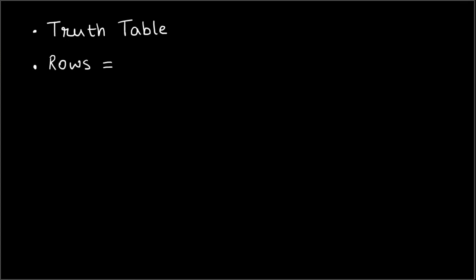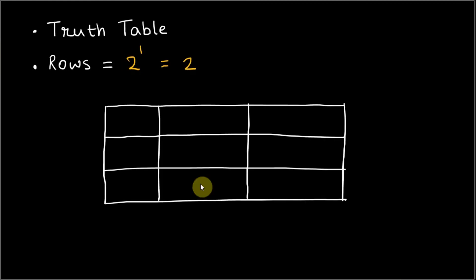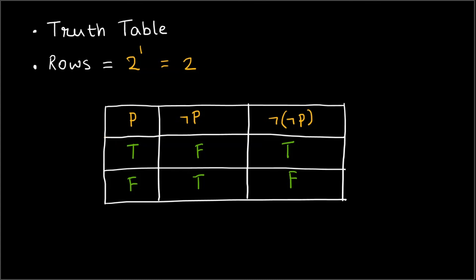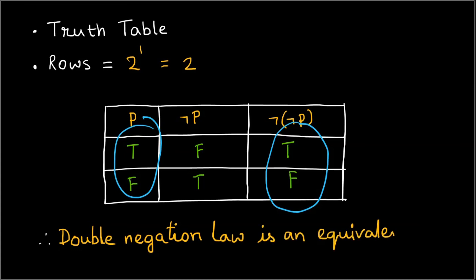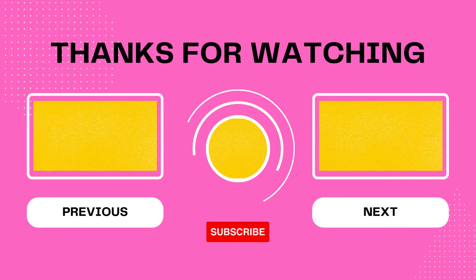We can now make a truth table for the double negation law. Since P is the only variable, the truth table contains two raised to one equals two rows. The columns are P, not P, and not of not P. Note that the double negation column matches with the column P, which proves that the double negation law is an equivalence.